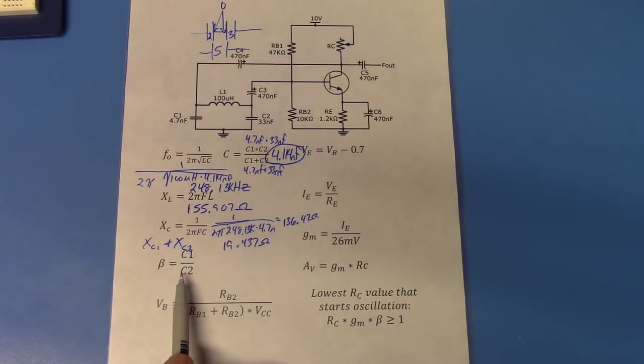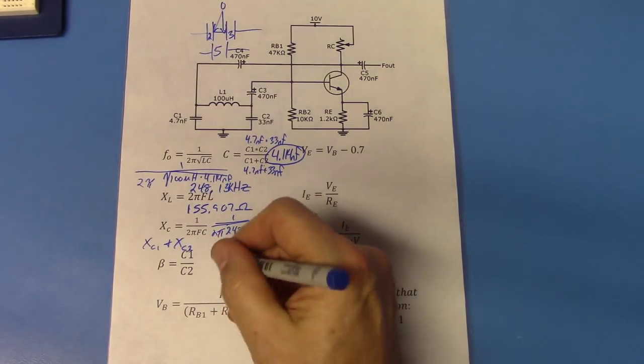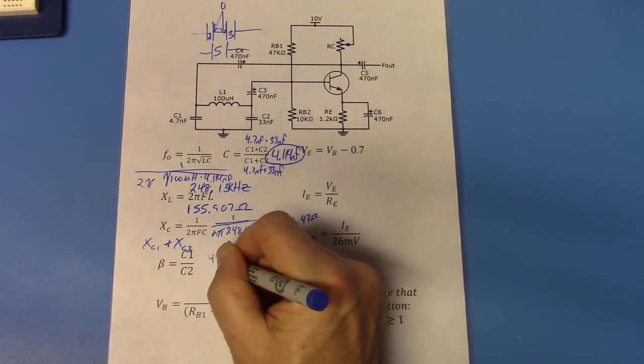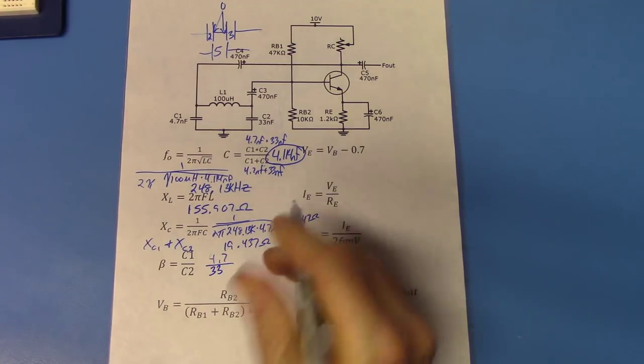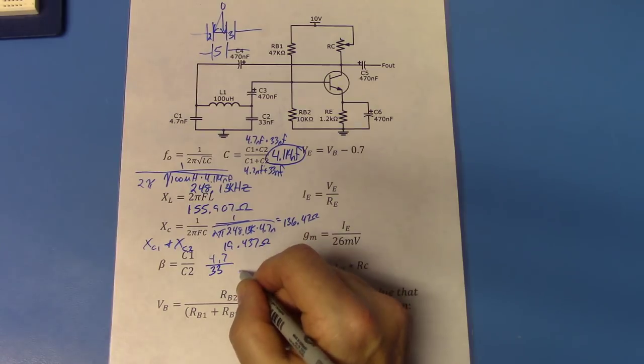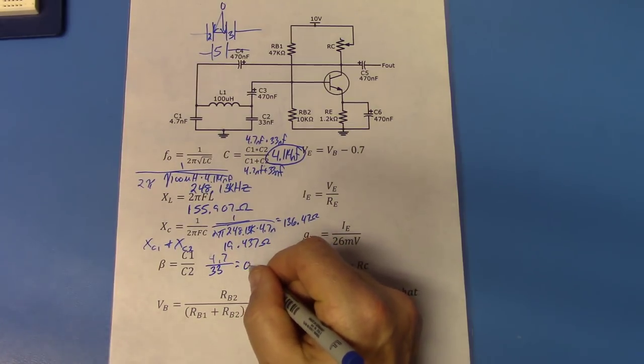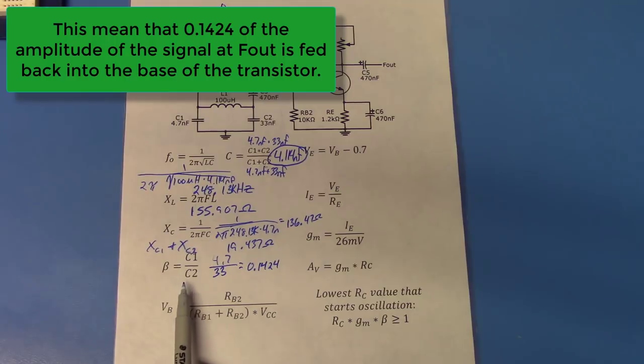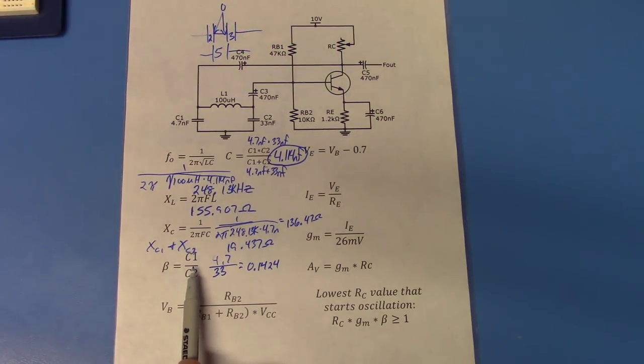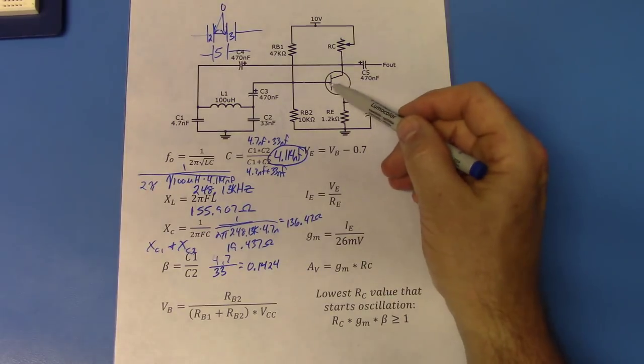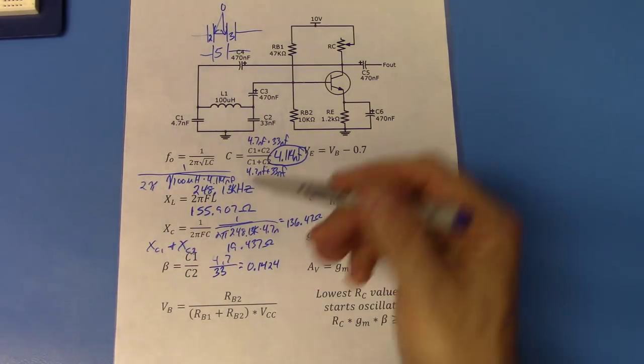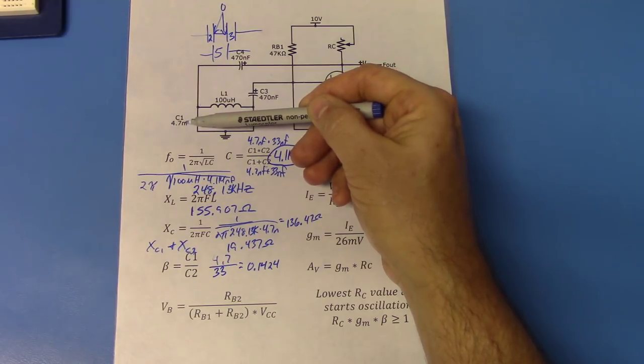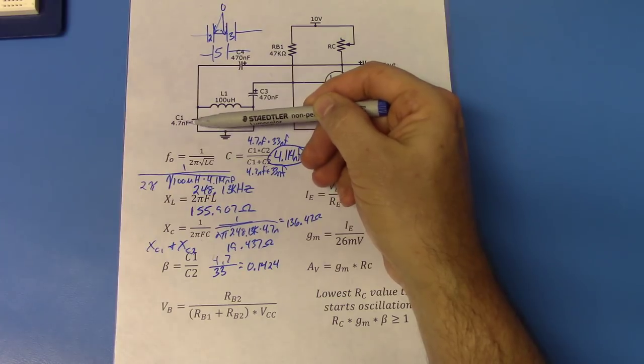The next thing we can do is find the attenuation or feedback factor of our circuit, and that's just given by C1 over C2. So we are going to have 4.7 nano over 33 nano, and I'm just going to leave the nano off since they're going to cancel. And we will get a feedback factor of 0.1424. Now a lot of people look at the circuit and say that C1 is not an attenuation, it's the output, and C2 is the actual part of the circuit that gets fed back in. And you are correct, but you have to remember that the bigger this capacitance is, or the smaller this capacitance is, the bigger its reactance is going to be.